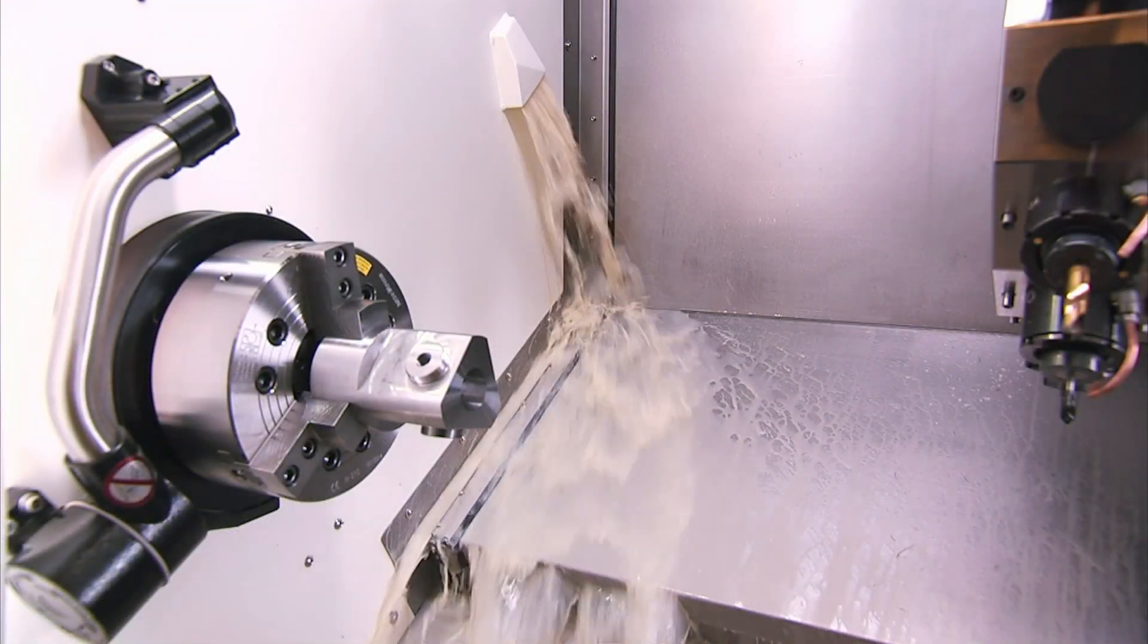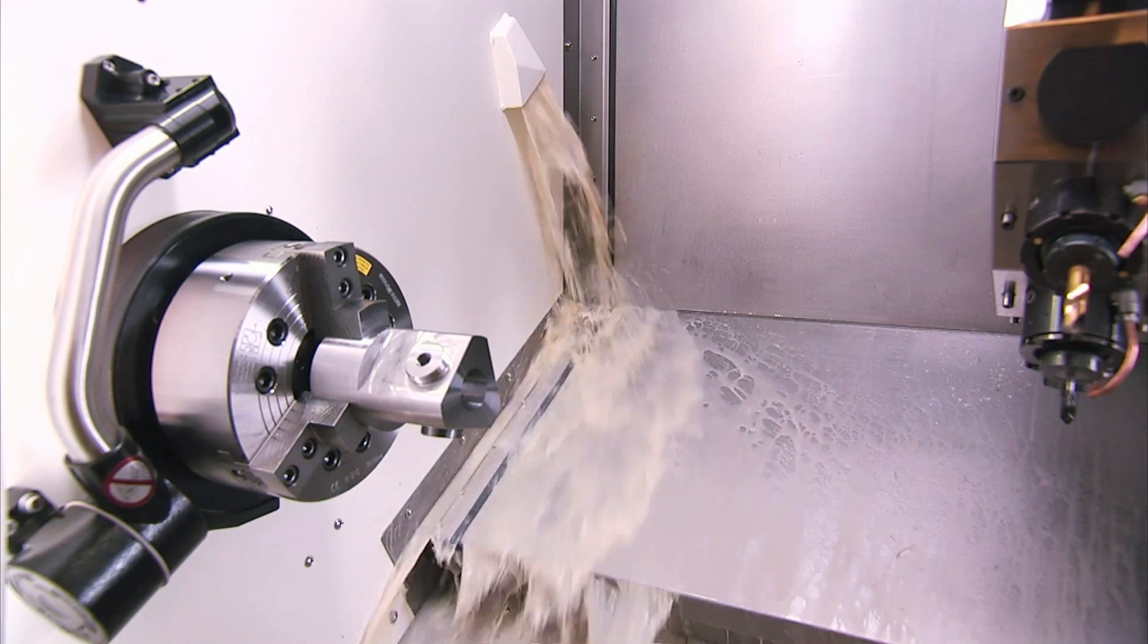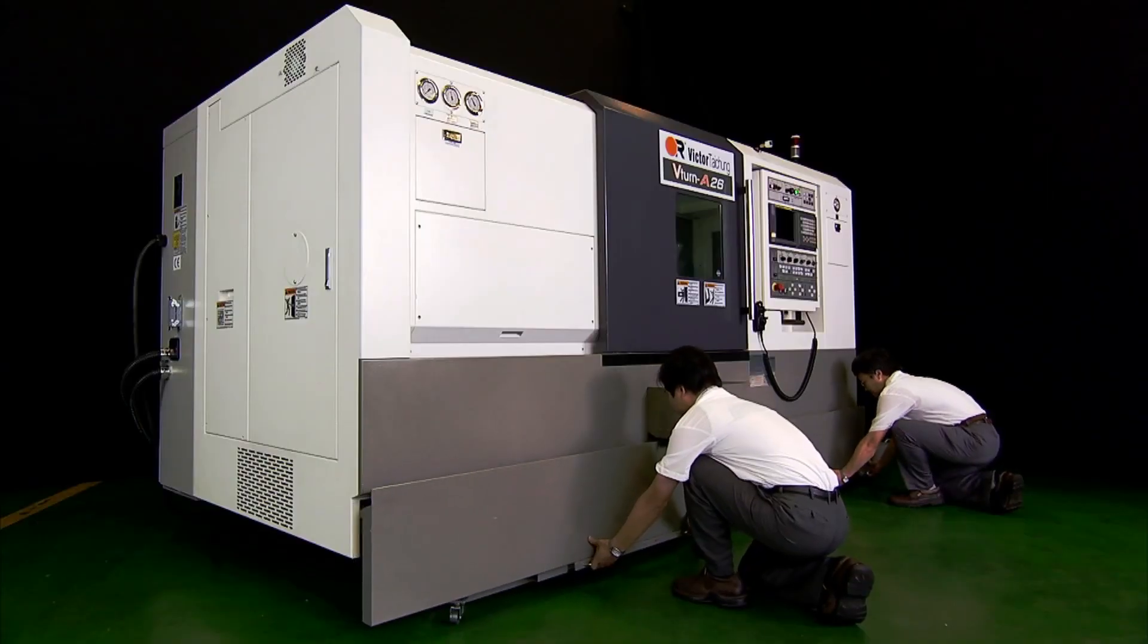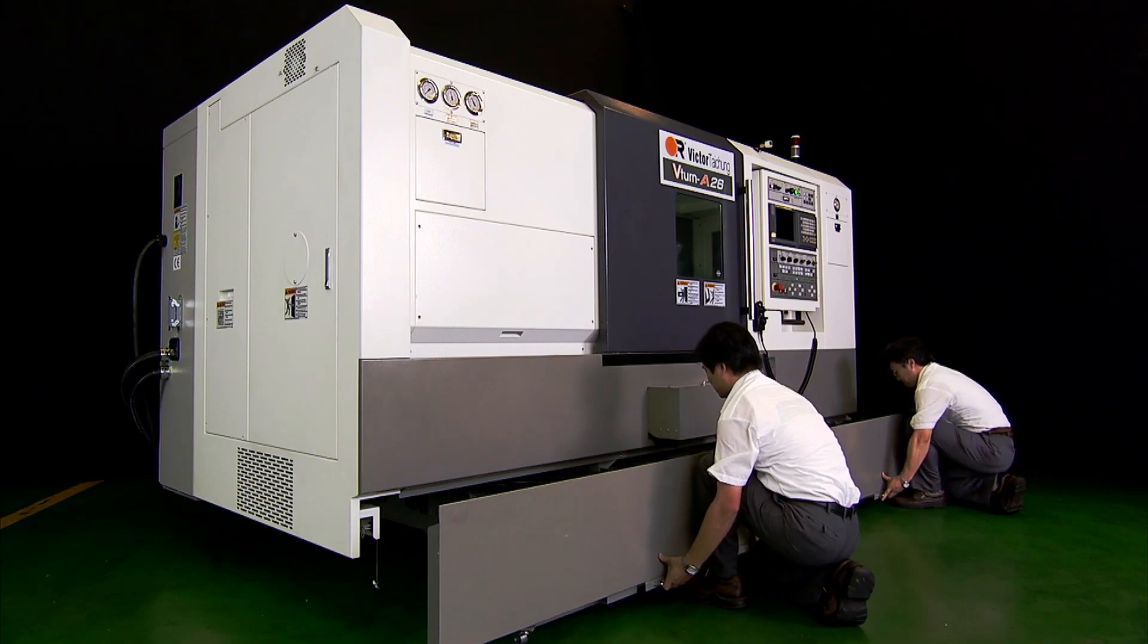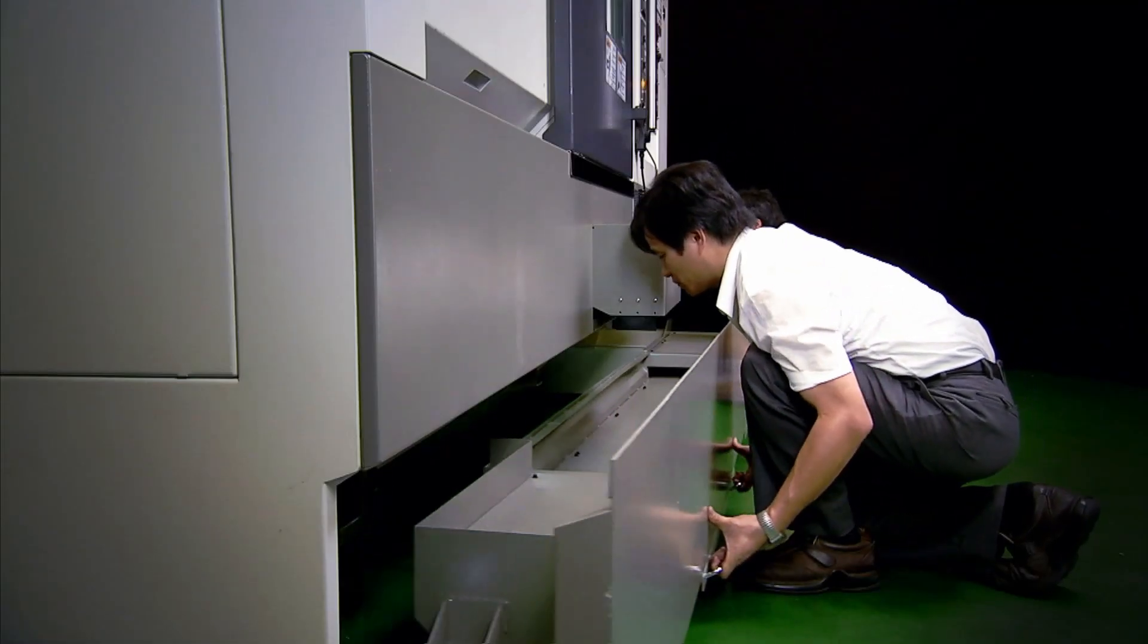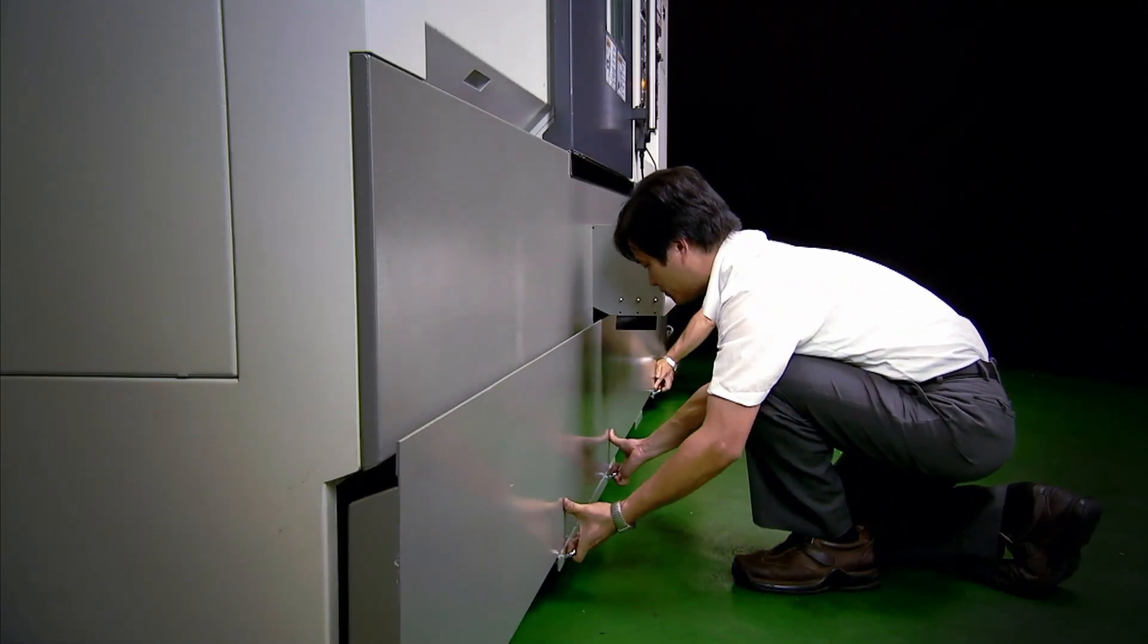Coolant flush onto the Z-axis cover further reduces the chip accumulation. Chip conveyor follows the coolant tank to be removed from the machine front. Reduces space floor requirement.